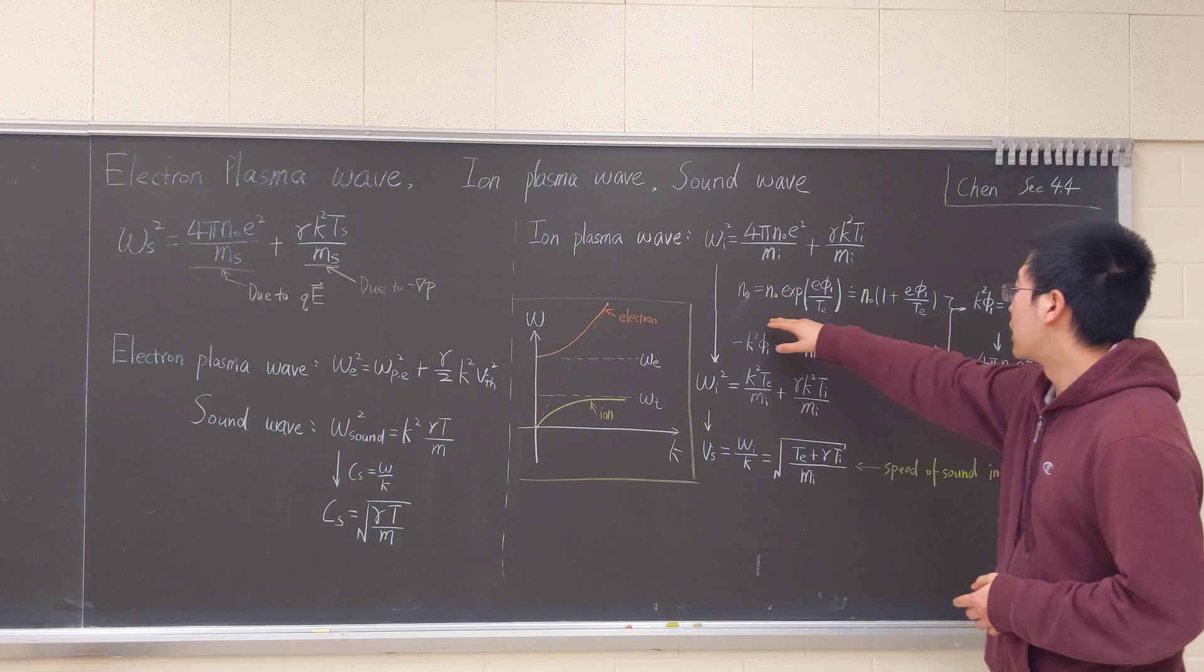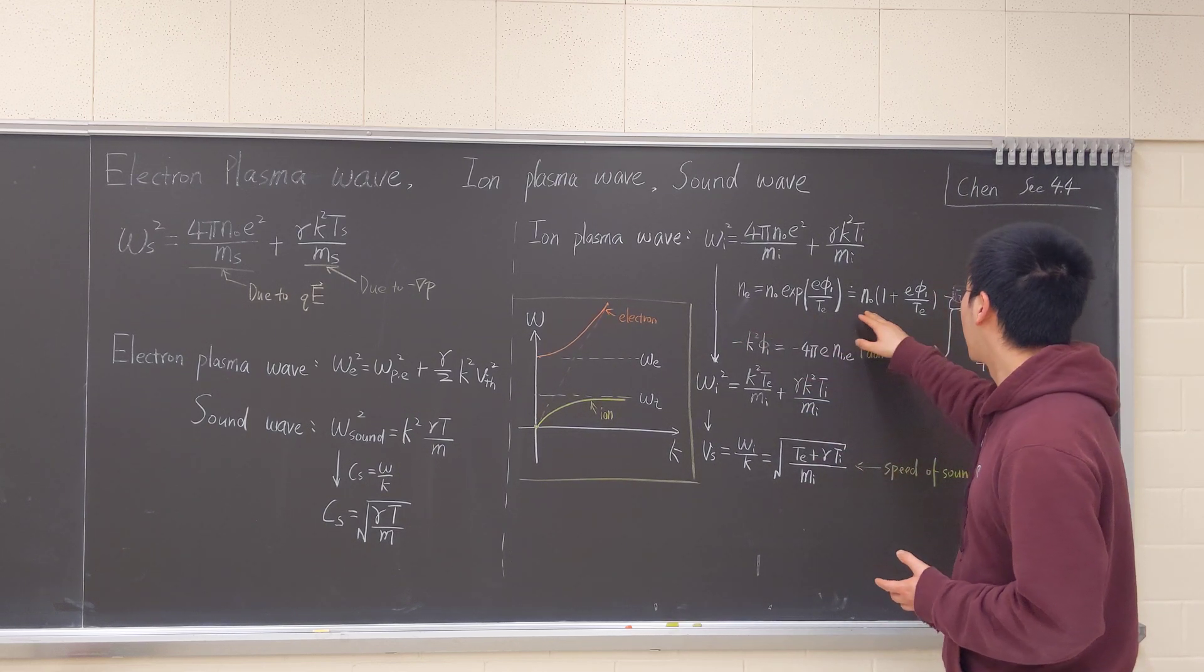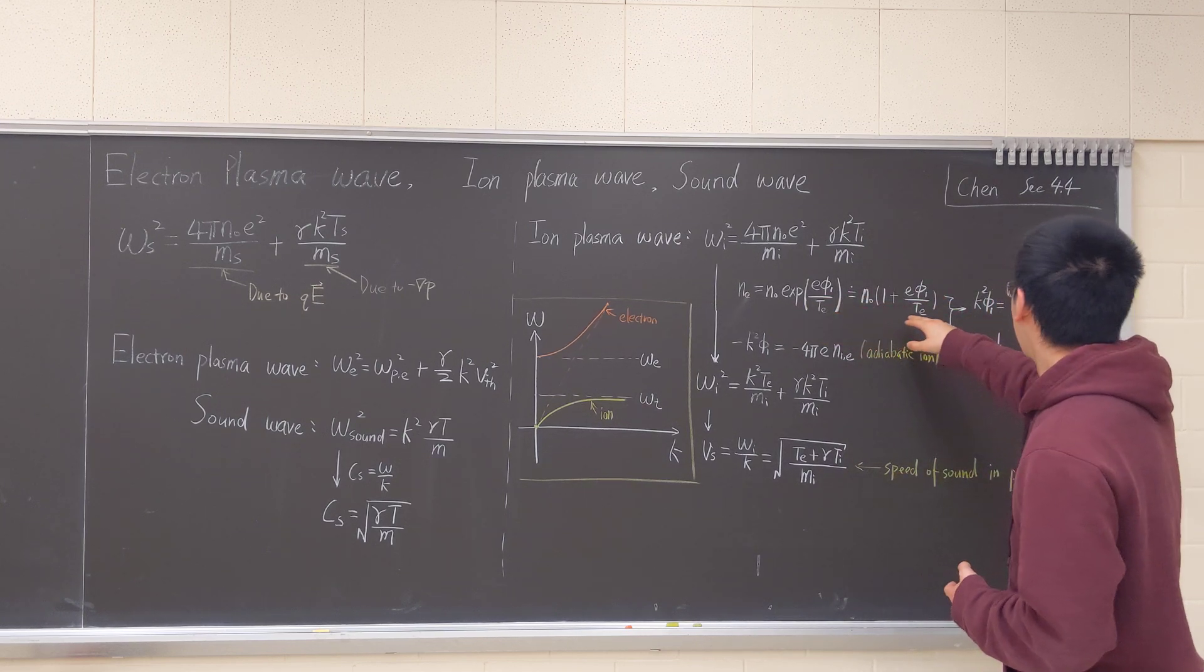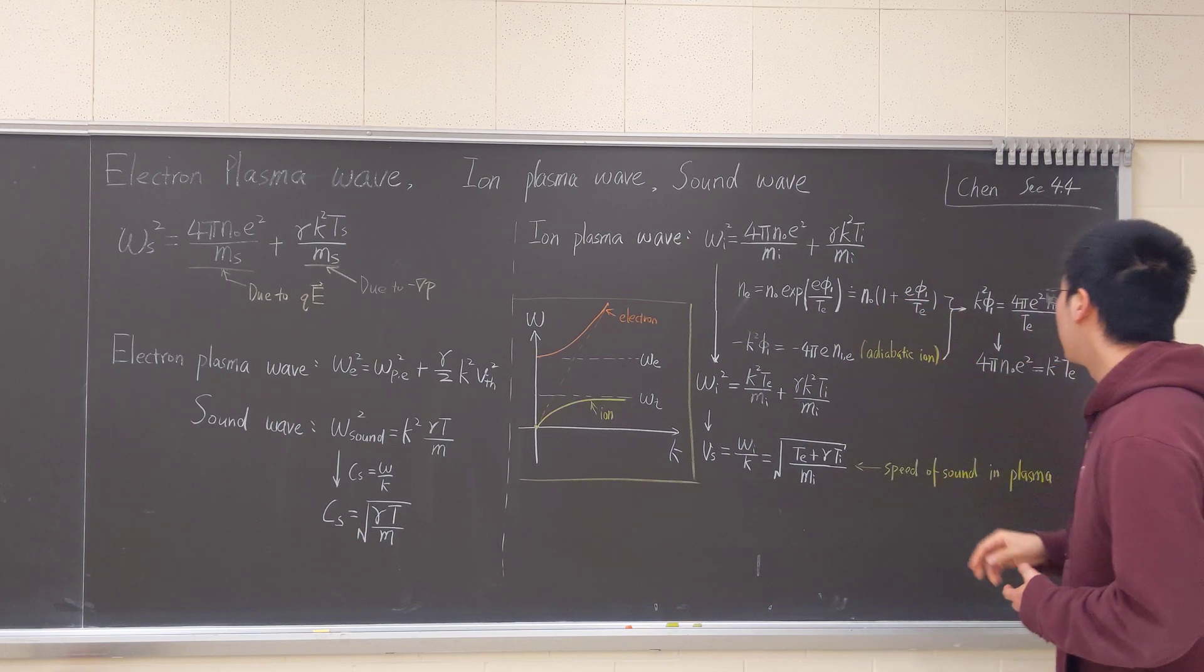So we consider the Debye shielding. We have to do the approximation of N-1, N-1 will be N-0 e phi-1 over T-E.